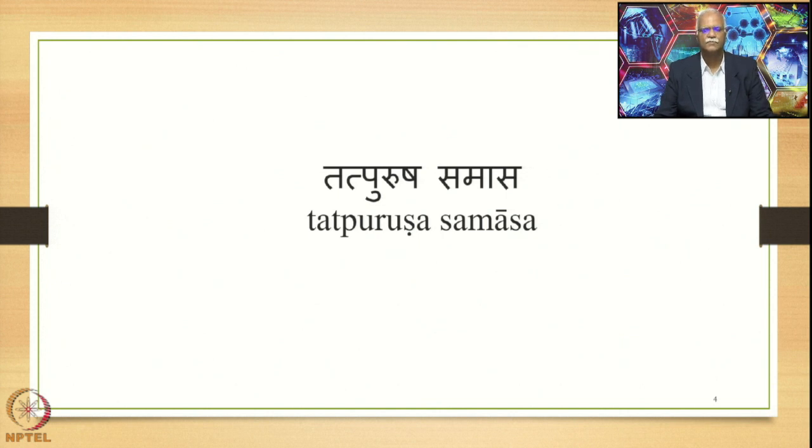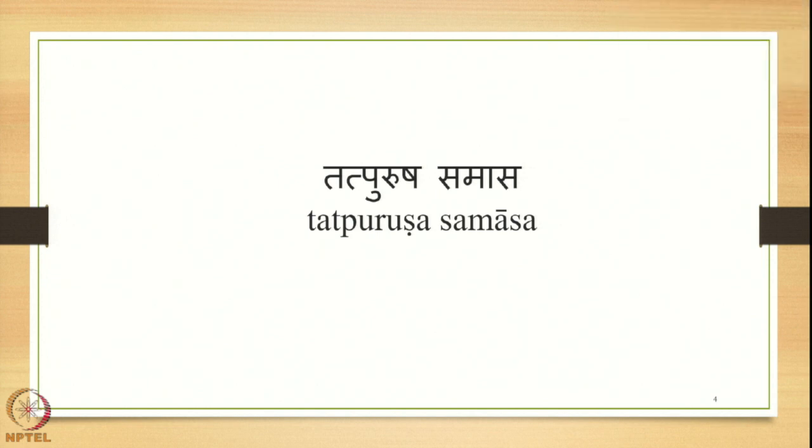In this course, we are concentrating on the Tatpurusha Samasa. Tatpurusha is one of the four major types of Samasas in Sanskrit: Avyaibhava, Tatpurusha, Bahurihi, and Dvandva. Tatpurusha Samasa is perhaps by far the most productive of the Samasas in Sanskrit, and there are many varieties of Tatpurusha Samasa.